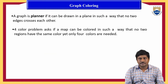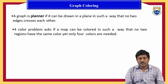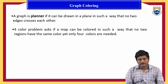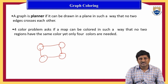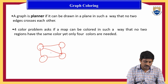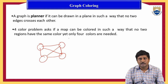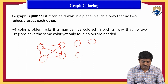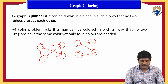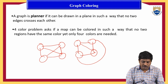A graph is planar if it can be drawn in a plane such that no two edges cross each other. In this graph, we observe that no two edges cross each other, so this is a planar graph. If we draw it differently where edges cross, that is not a planar graph. Suppose you want to convert a non-planar graph into a planar graph — we redraw the edges so they no longer cross, and the non-planar graph is converted into a planar graph.